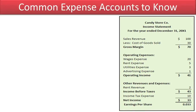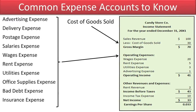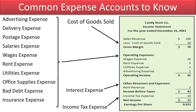The primary expense accounts used throughout this course are: cost of goods sold, operating expenses, interest expense, and income tax expense. Interest expense and income tax expense are not operating expenses — they are below-the-line deductions that do not impact a company's operating income. Interest expense is classified as an other expense.